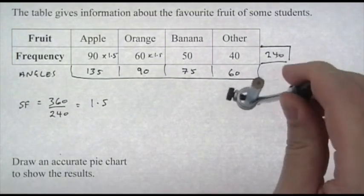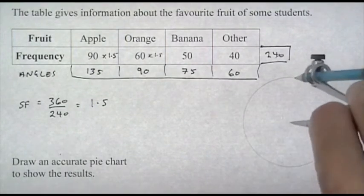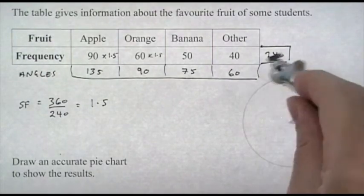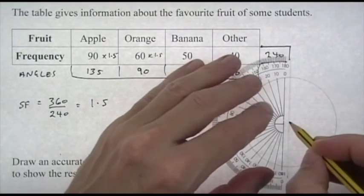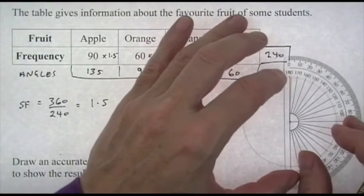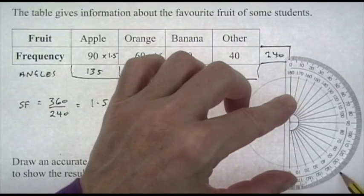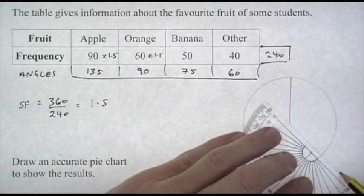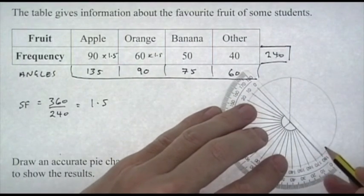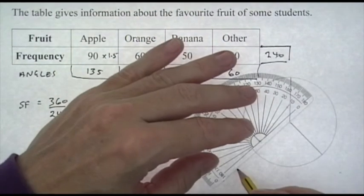Now again draw the circle as large as will fit in the space you've got to maintain maximum accuracy. Once you've drawn the circle, draw a vertical line straight up from the center. The first angle is 135, so center the protractor on the center of the circle and zero line on the line you've drawn straight up. Measure 135. Then we've got 90 degrees.